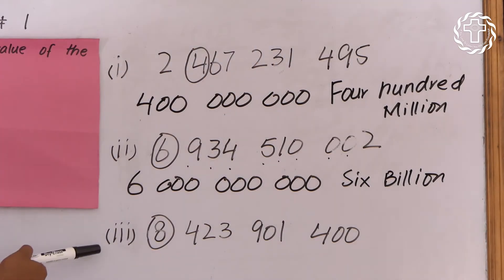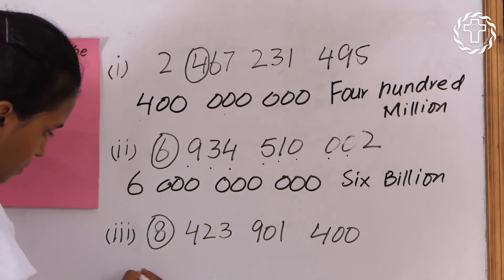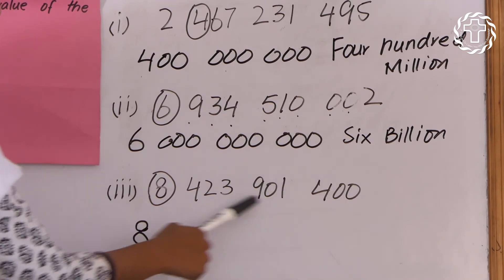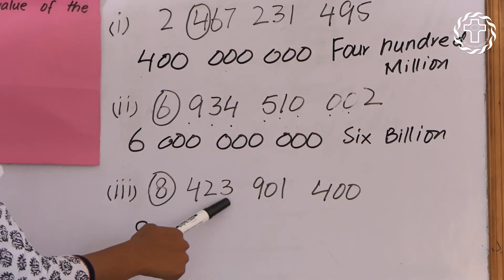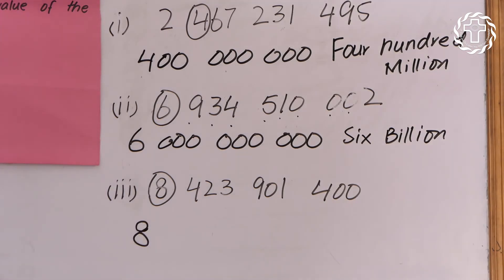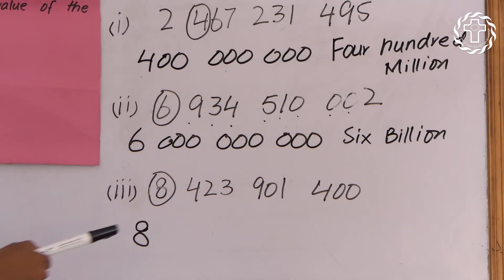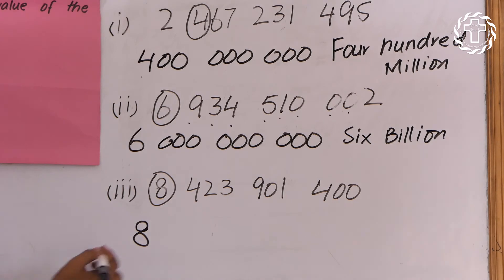The third number here — the eight is the ringed digit. We will put eight as it is, then we will count the digits on the right side of the ringed digit: one, two, three, four, five, six, seven, eight, nine — we have nine digits on the right side. So we will put nine zeros on the right side of the eight digit.